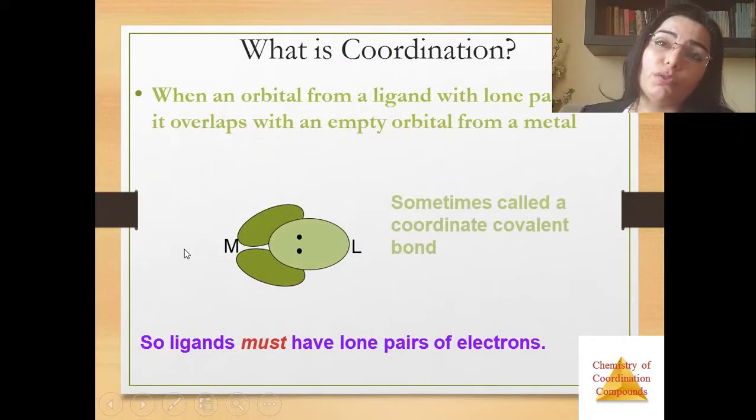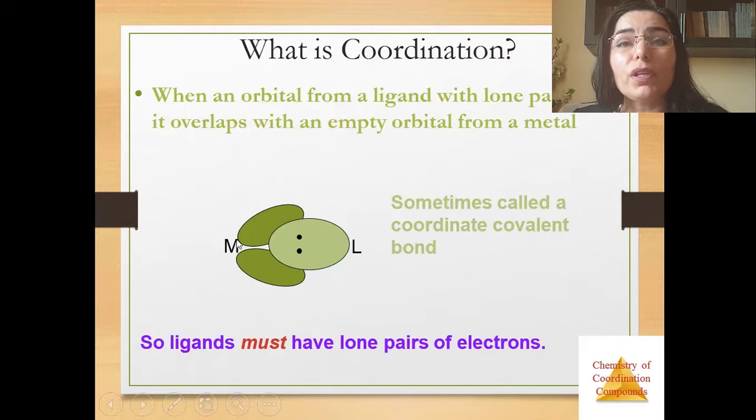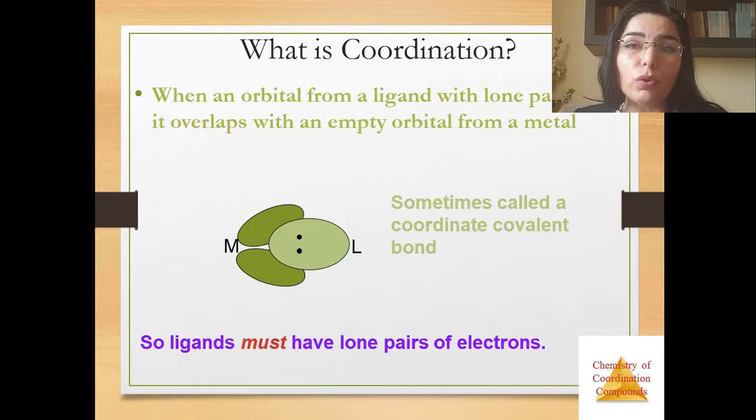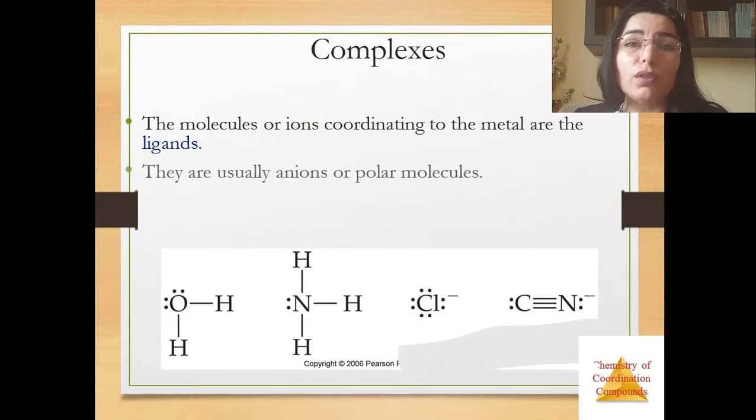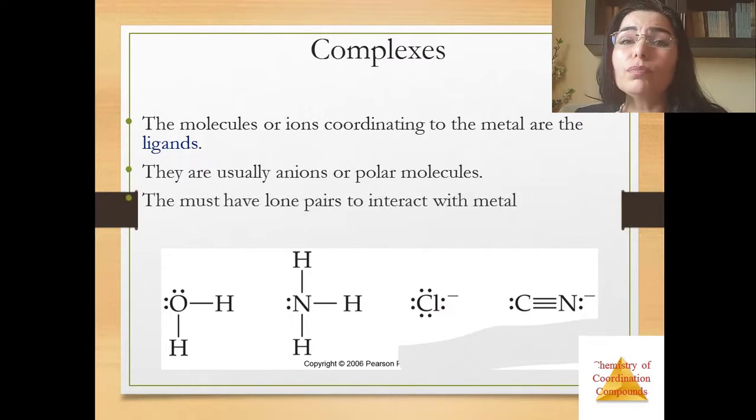Now about coordination. What's coordination? When an orbital from a ligand with lone pairs overlaps with an empty orbital from a metal, it's sometimes called coordinate covalent bond, so ligands must have lone pairs of electrons. The molecules or ions coordinating to the metal are the ligands. They are usual ions or polar molecules and they must have lone pairs to interact with metal like this. In this example you see here.